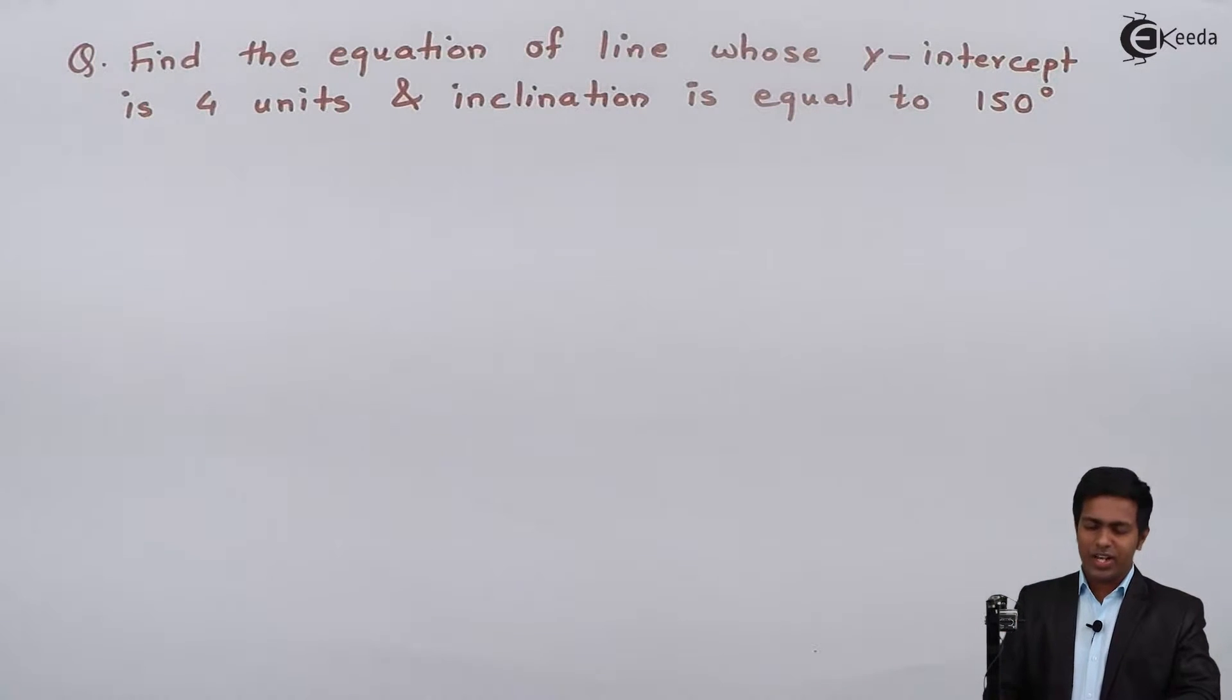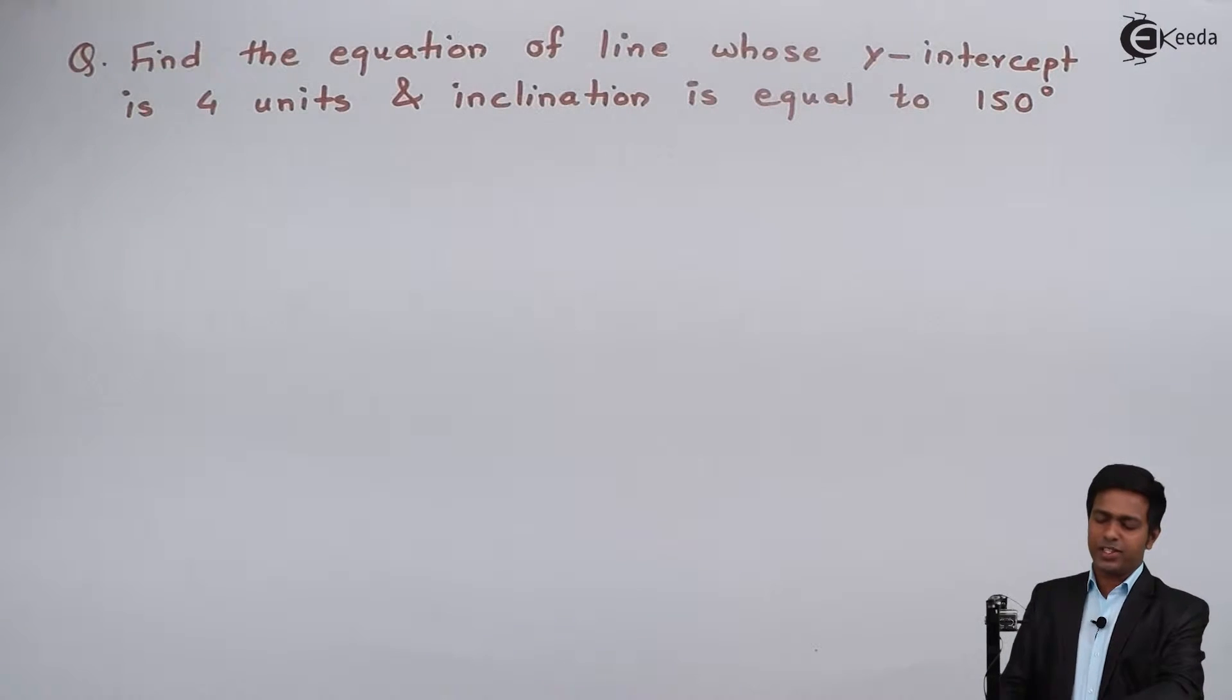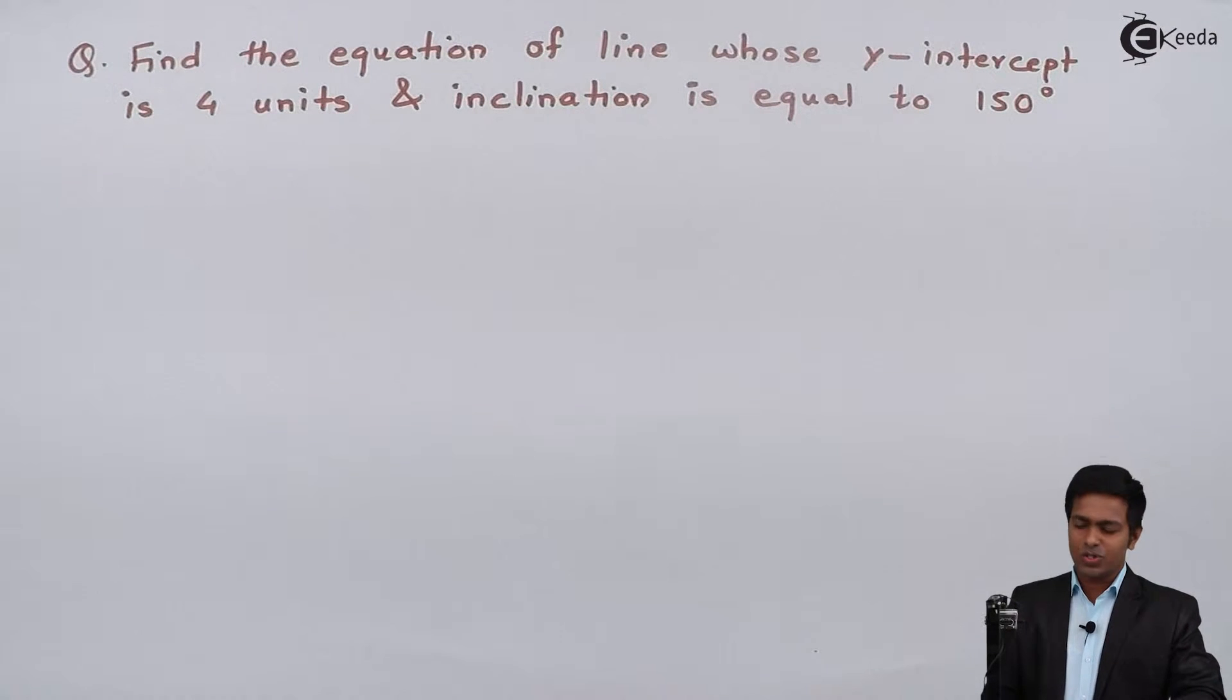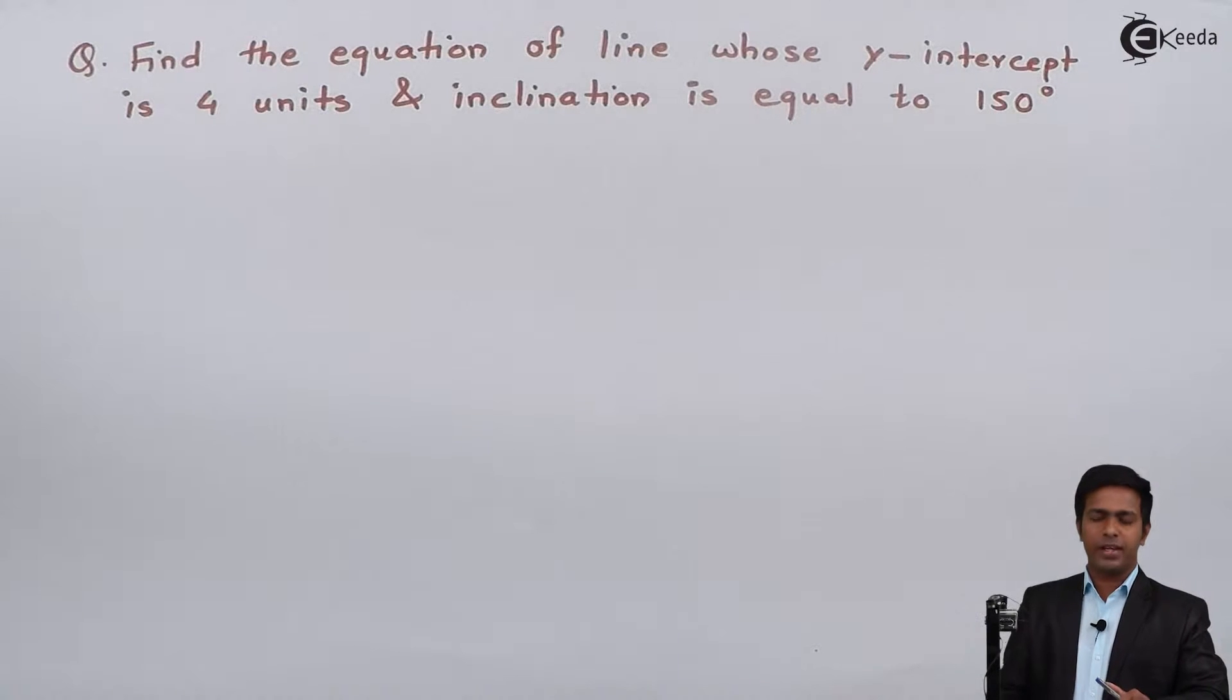Hello everyone, so here in this problem we have to find the equation of a line whose y-intercept is 4 units and its inclination theta is equal to 150 degrees.